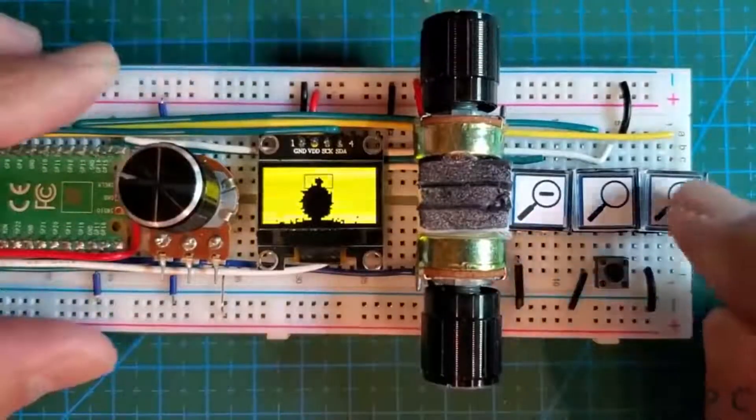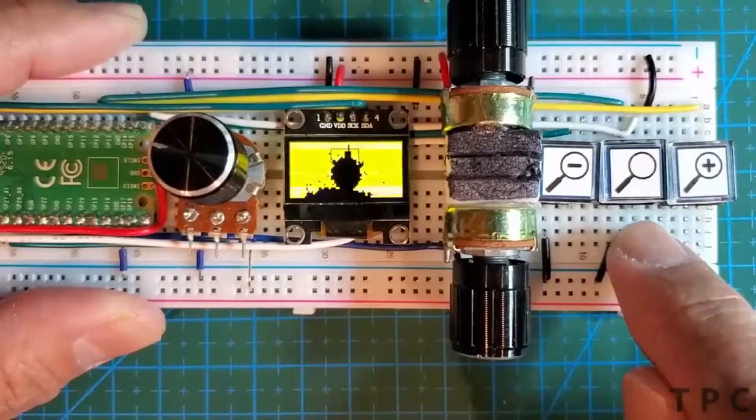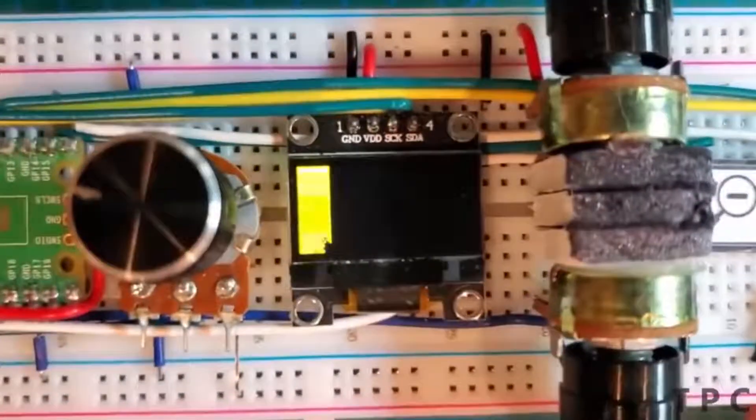Once you find the perfect portion, press the zoom button to get a clearer image on the OLED display. To get the image in a higher resolution just press the bottom button.